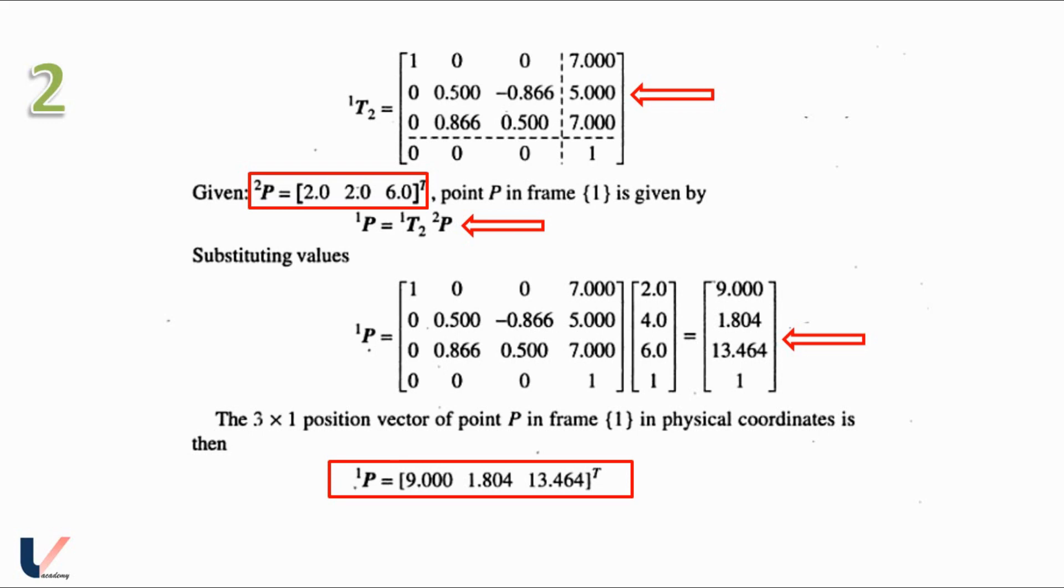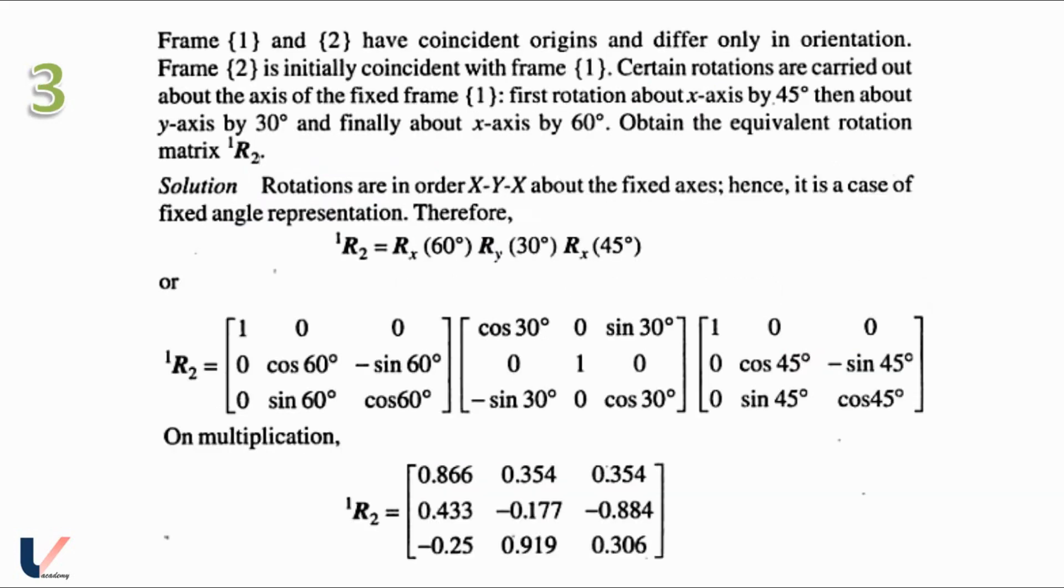9, 1.804 and 13.464 are the physical coordinates of the point P, so this is the position vector of the point P.